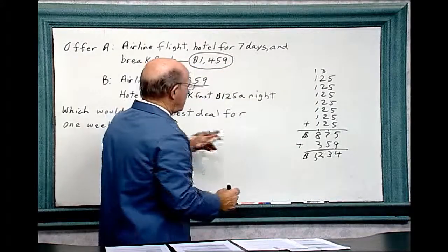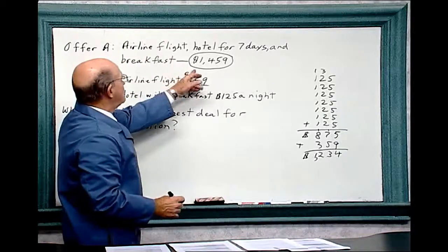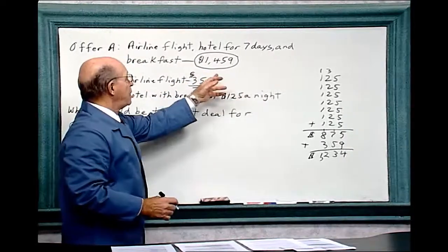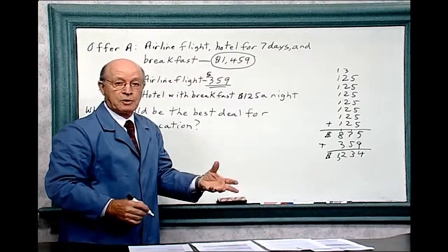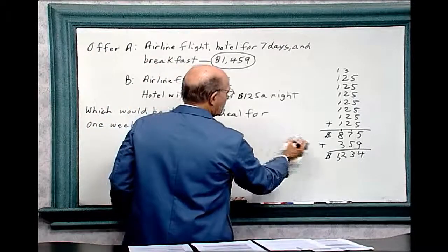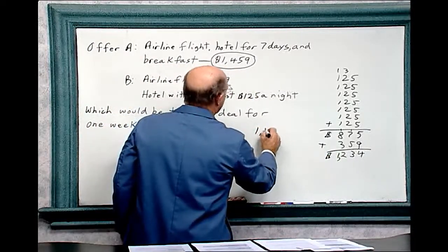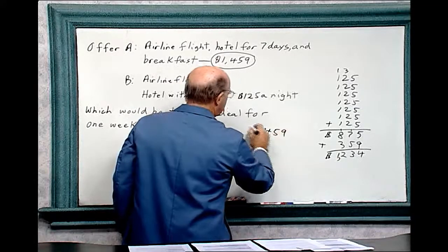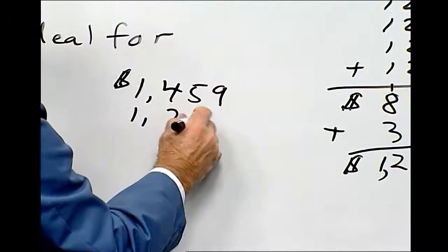So offer B is $1,234, and offer A is $1,459. So obviously, offer B is much cheaper. Let's see how much money we save with that. So we can deduct $1,234 from $1,459.